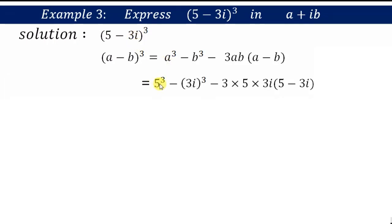Here a is 5, so that will be 5³, and b is 3i, that will be (3i)³, minus 3a is 5, b is 3i, a is 5 minus b is 3i.